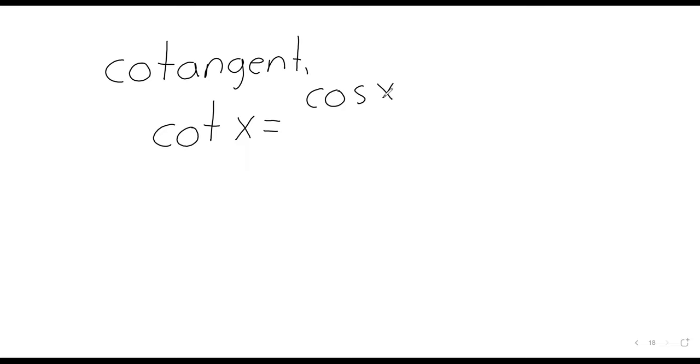And the cotangent is the cosine over the sine, which is one divided by the tangent. So the cotangent and the tangent are related in this way. The cotangent is one over the tangent. But none of the other trig functions are related to their cofunction in that way. The cosine is not one divided by the sine. The cosecant is not one divided by the secant.